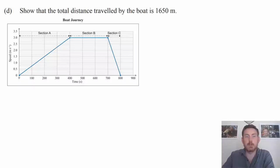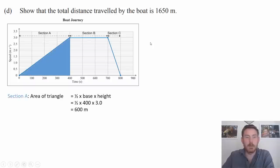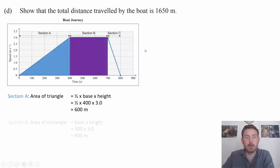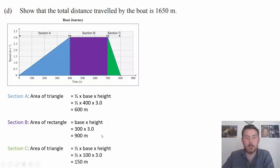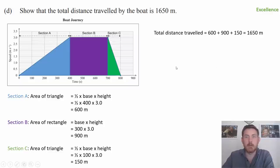For question D, we need to show the total distance traveled by the boat is 1650 meters. Since we have a speed-time graph, distance is given by the area under the graph. Section A is a triangle: half times 400 times 3 gives 600 meters. Section B is a rectangle: 300 times 3 gives 900 meters. Section C is a triangle: half times base times height gives 150 meters. Combined, the total is 1650 meters — an excellence level response.